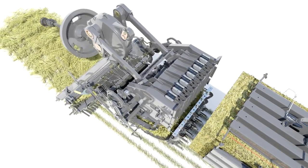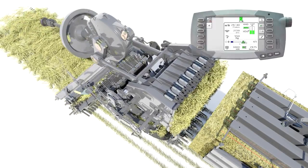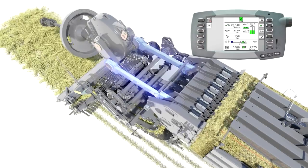As the bale forms, the force required to push the crop rearwards is measured by dual load cells located inside the plunger load arms.